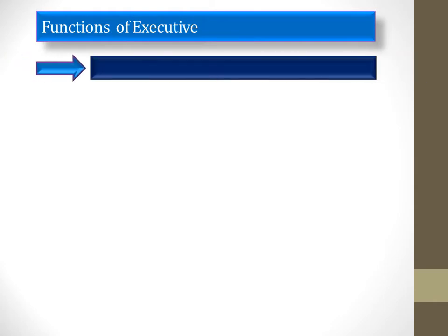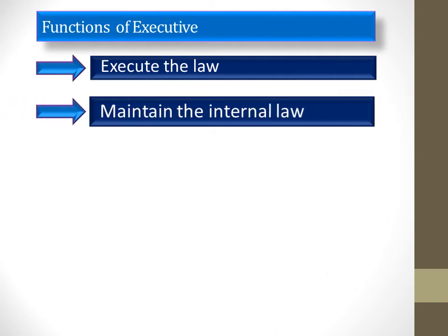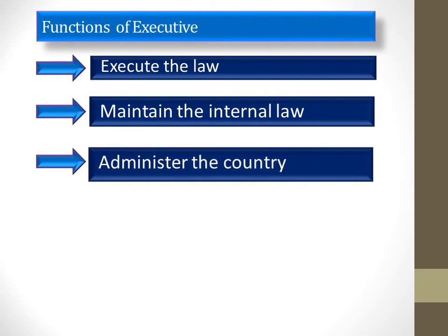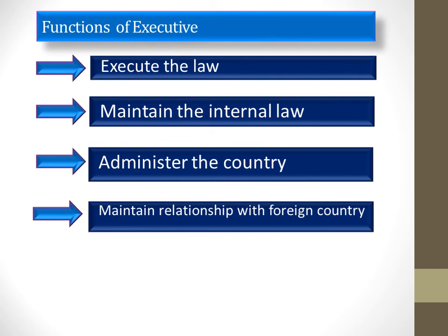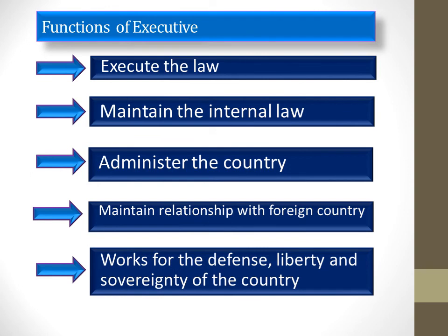Functions of the executive group: the main work of government is actually done by the executive group. They execute the laws enacted by the legislative group. They maintain internal law and order of the country. They administer the country smoothly. They maintain relationships with foreign countries and work for the defense, liberty, and sovereignty of the country.